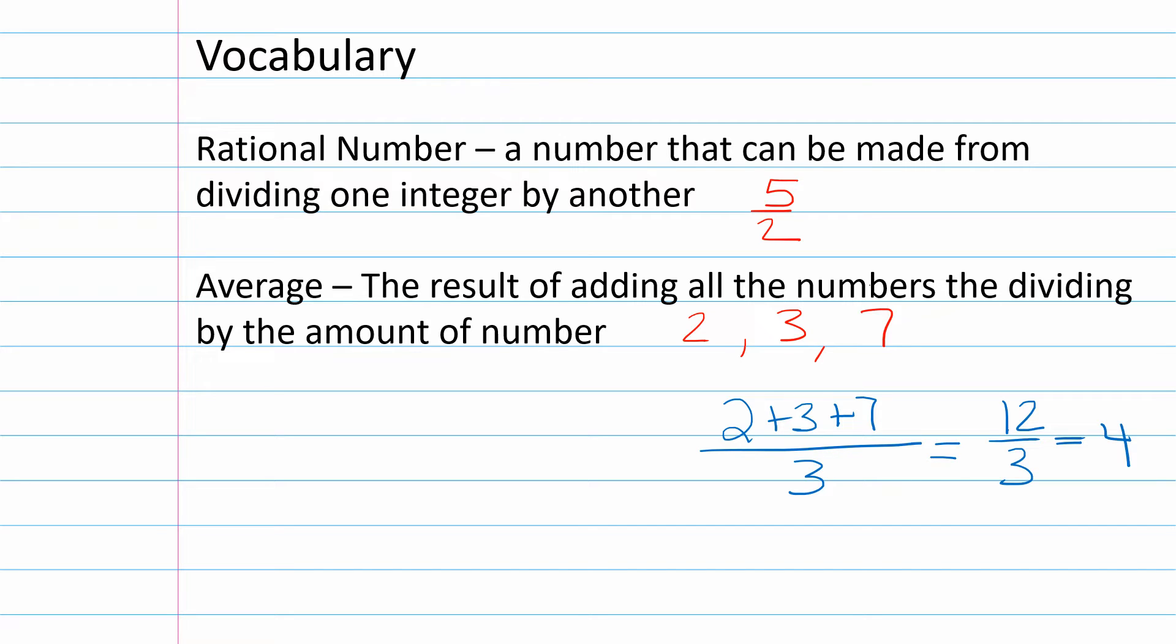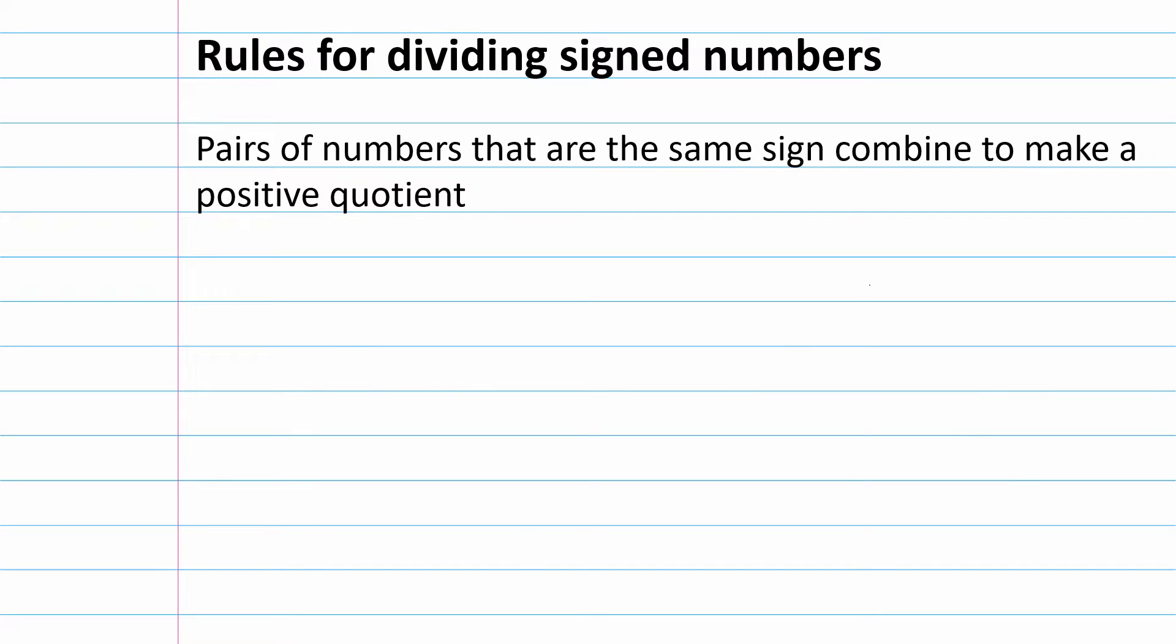Let's continue with some rules for dividing signed numbers. These rules are very similar to the rules for multiplying signed numbers. Pairs of numbers that are the same sign combine to make a positive quotient. For example, 5÷5—both positive numbers—equals a positive quotient of 1. However, -5÷(-5)—both negative signs, same sign—creates a positive 1. Pairs of numbers with the same sign make a positive quotient.